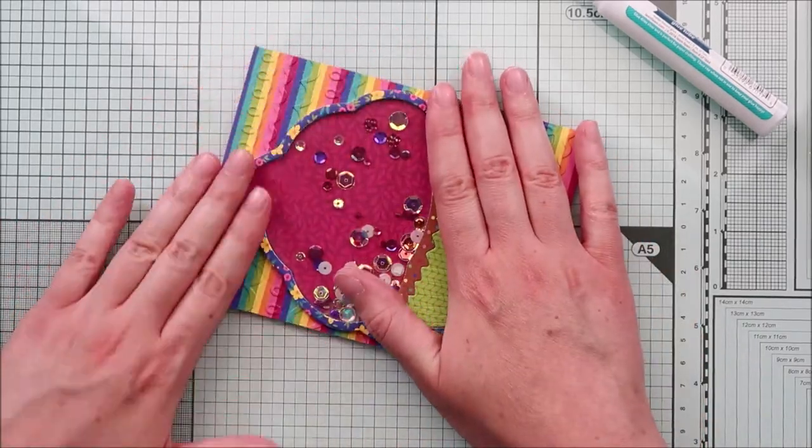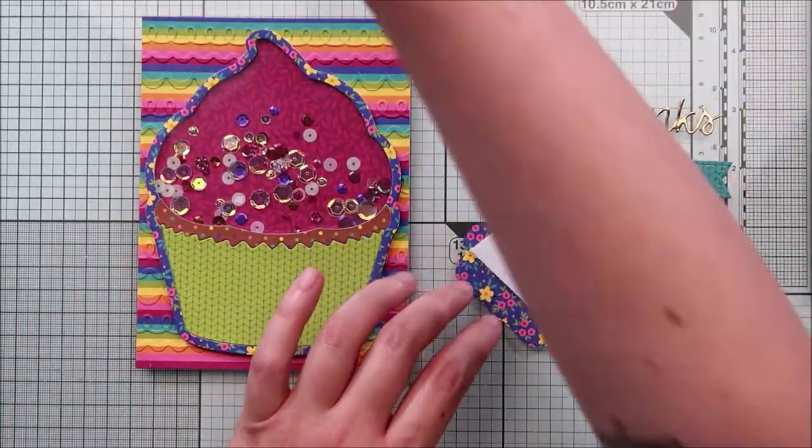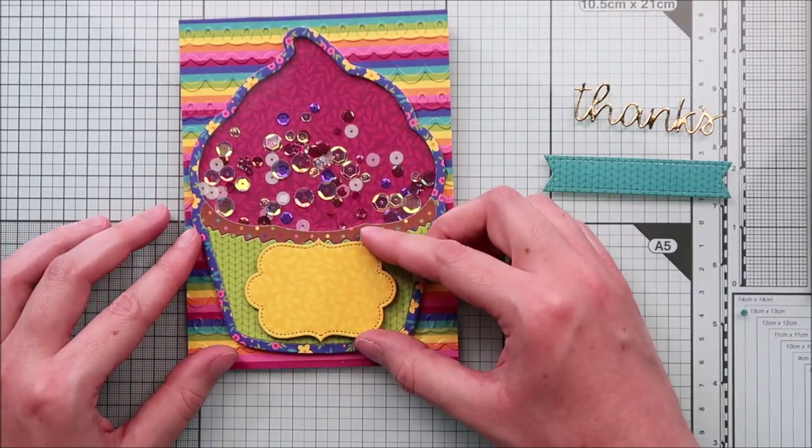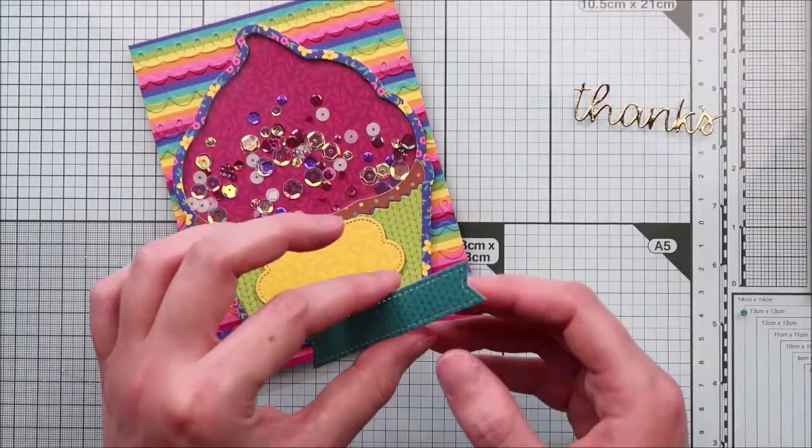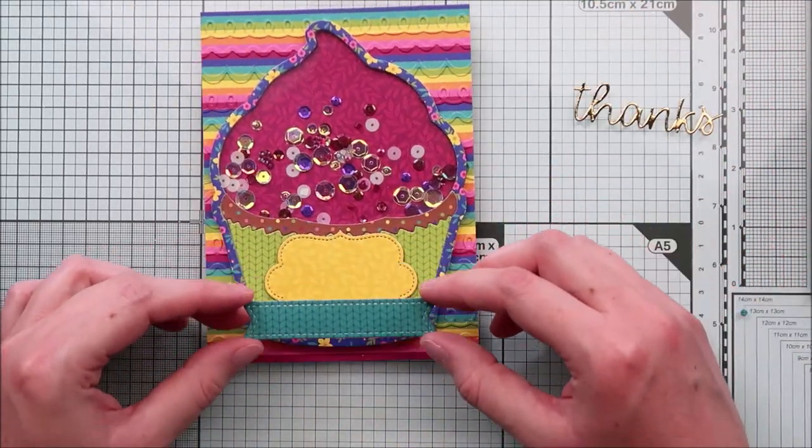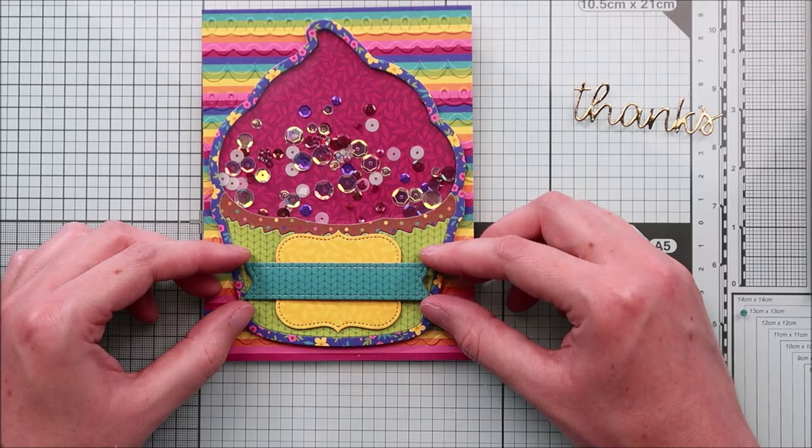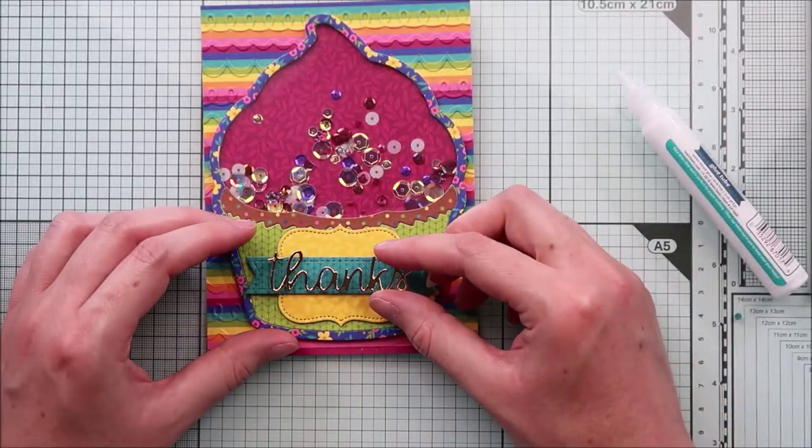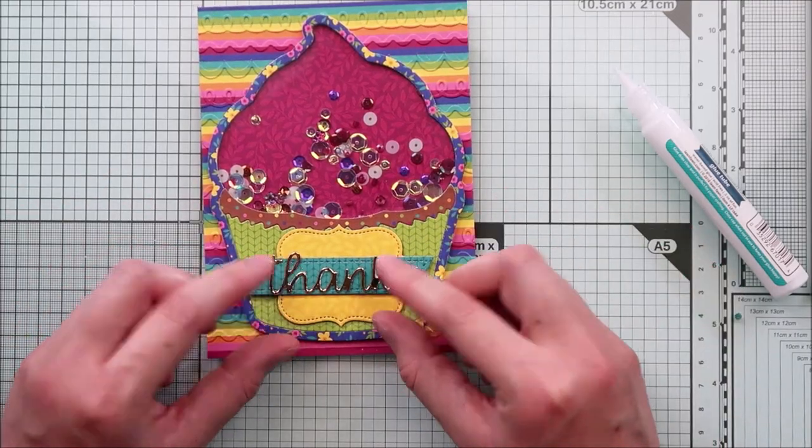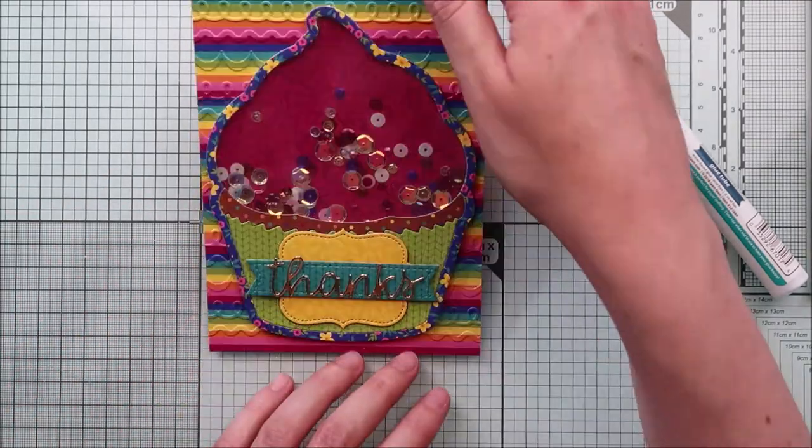Next, I cut two banners. Again, the papers are from the new Sweater Weather paper pack. I attached those banners on top of each other on the bottom section of the cupcake. And finally, I stuck the word thanks. I cut it out of gold mirror cardstock and stuck it on top of the banners.